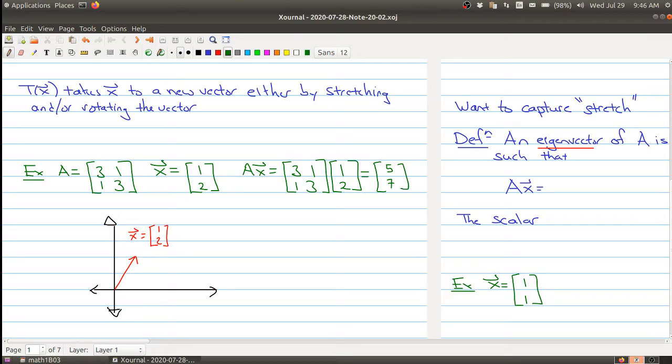And the new vector that I get is [5, 7]. Hopefully I did my arithmetic right. And so we can plot this, where this new vector is. And this new vector, and this is not going to be to scale, is somewhere over here. So we have [5, 7]. And here let me put not to scale.